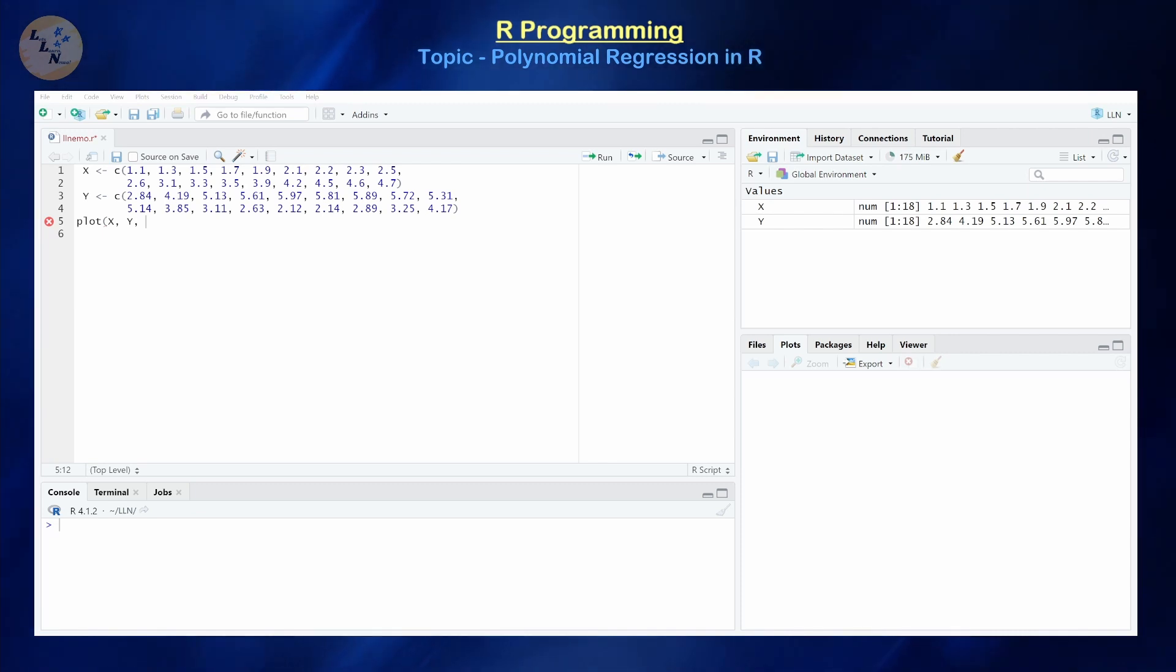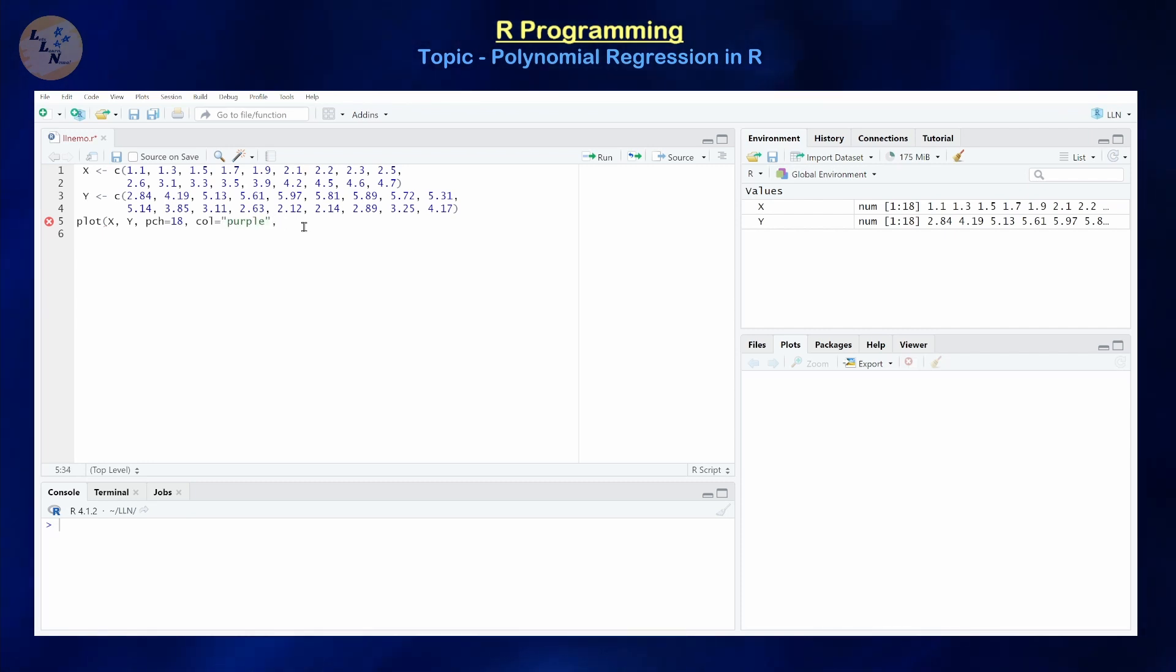I want to make the scatter plot a little bit more interesting to look at, so I'm going to add a little bit of shape and color to this. So PCH equals 18, which references a particular shape or style for these points. There are several different colors that you could have in the R programming language. Let's assume we choose purple, and CX is going to be equal to the point size for each of the points.